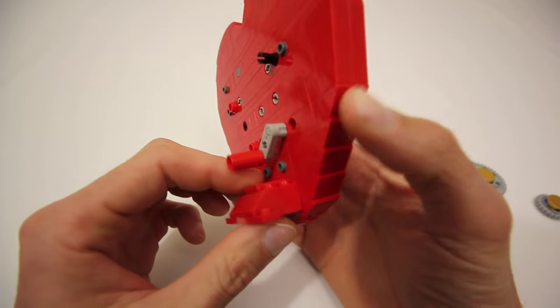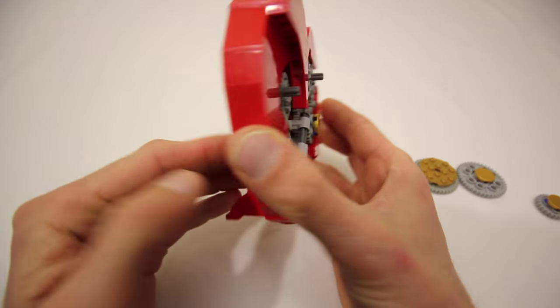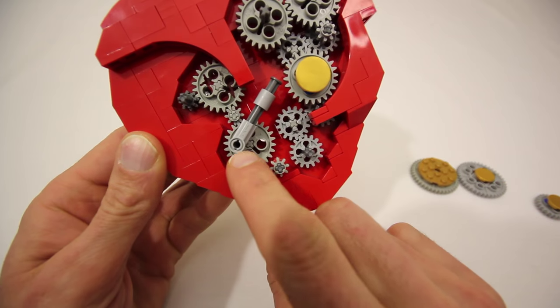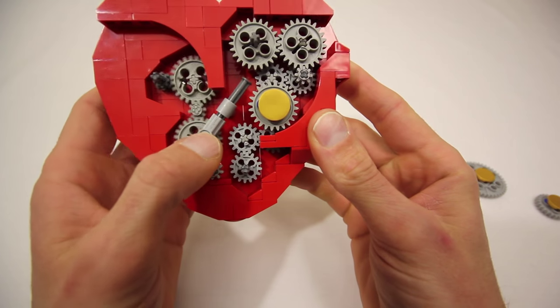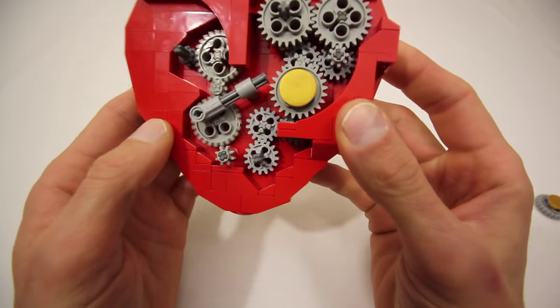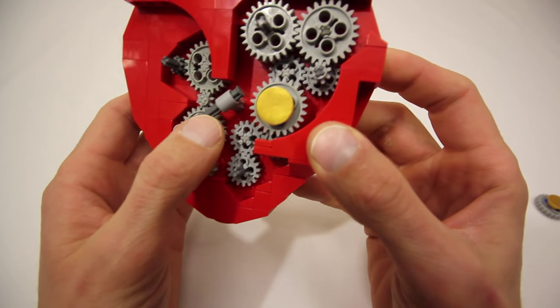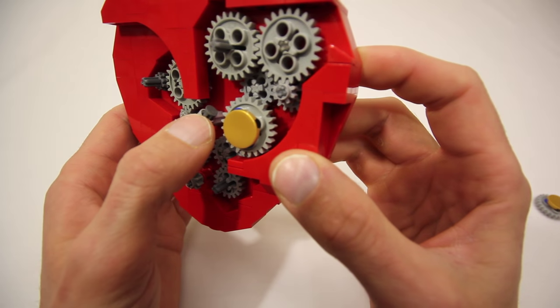Right now I have it manually operated using this crank in the back which is connected to this 24-tooth gear in the front which drives this piston. And all the piston is is a four stud long Technic axle with a stopper on the end which catches the teeth of this 24-tooth gear with every stroke.